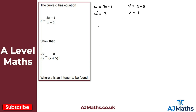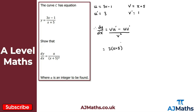We've got everything we need. Recalling the quotient rule formula: dy by dx equals v times u prime minus u times v prime, all divided by v squared. Substituting in: v times u prime is (x+5) multiplied by 3, giving 3(x+5). Then we subtract u times v prime, which is minus (3x minus 1) multiplied by 1. This is all divided by (x+5) squared.